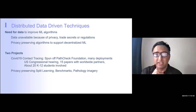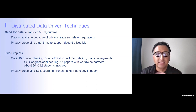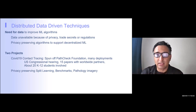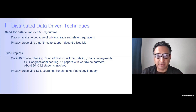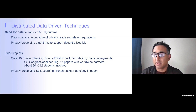The main story here is that anytime you have distributed data that you need for machine learning, the data is unavailable because of privacy, trade secrets, or regulation. What we can do is use privacy-preserving algorithms to support machine learning algorithms that have been decentralized.